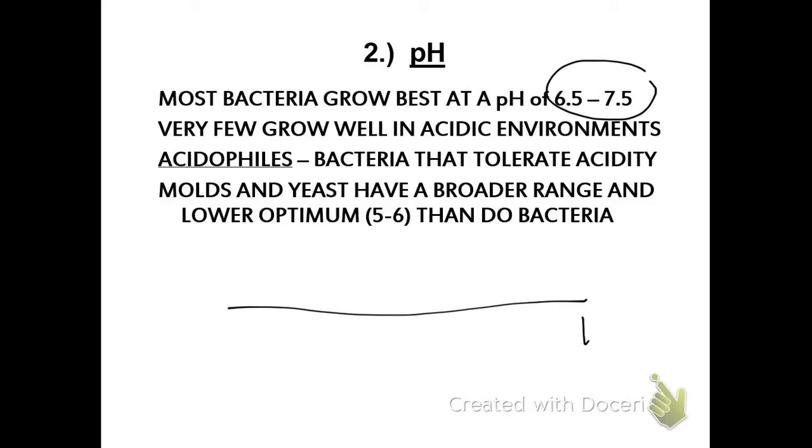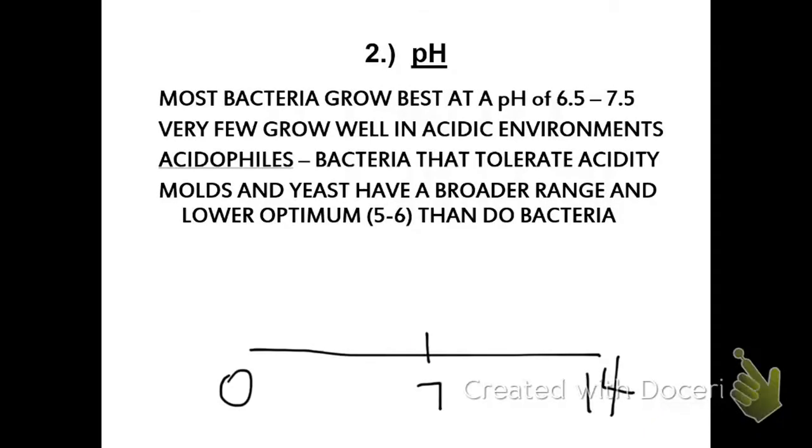Molds and yeast have a broader range. Where bacteria only has a one range, molds can grow at more acidic and more basic. Optimum is 5 to 6. If you look at their scale, bacteria grow best here and have a small range. Molds would be down here, 5 to 6. So they have a broader range and a lower optimum. They can grow at higher and lower pHs, but optimum is more acidic.